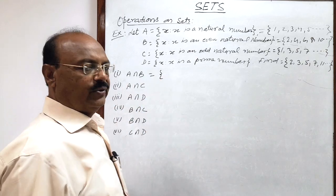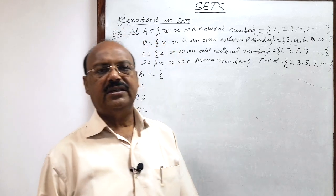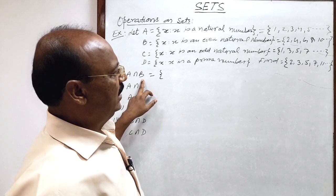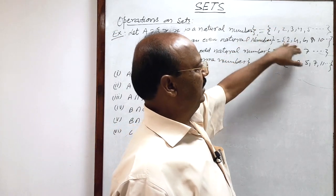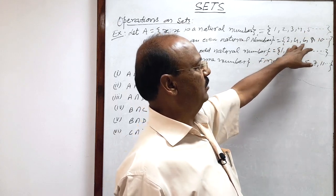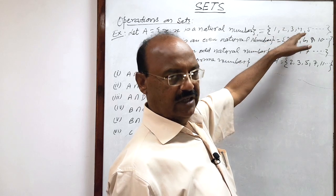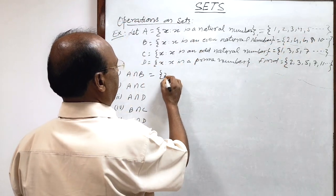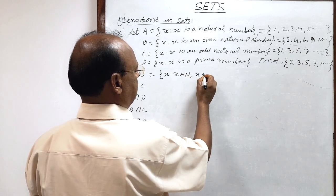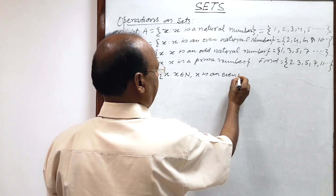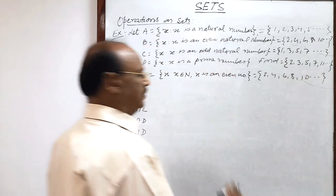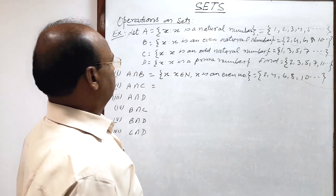A∩B: the intersection of two sets is a set which consists of common elements from both the sets. When we find A∩B, we collect all natural numbers common in both sets. A is the set of all natural numbers — 1, 2, 3, 4 — and B is the set of even natural numbers, so the common elements are naturally the even natural numbers: {x such that x belongs to the set of natural numbers and x is an even number}, i.e., 2, 4, 6, 8, 10 and so on.